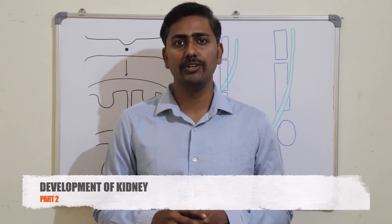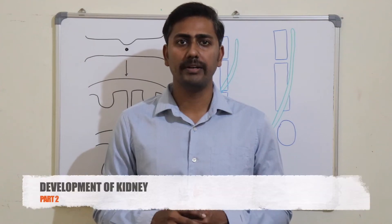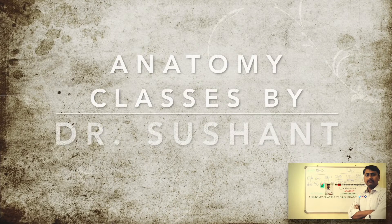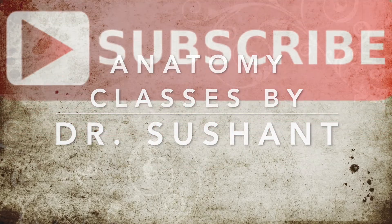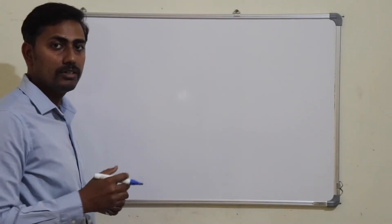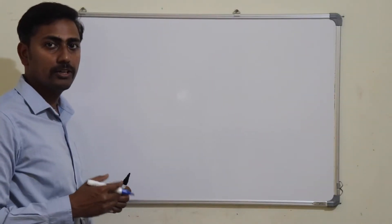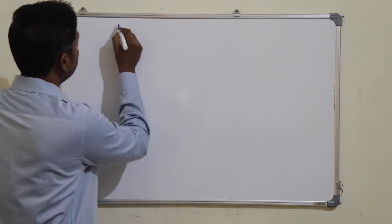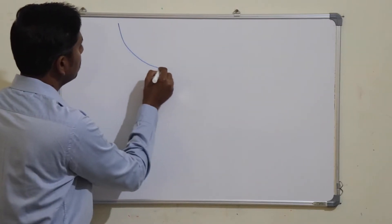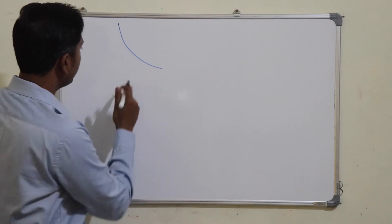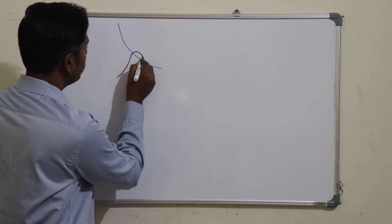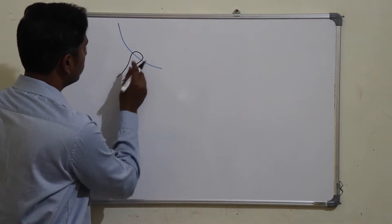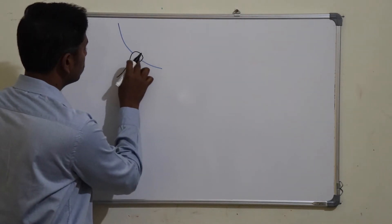Welcome friends. The topic of today's video is the deployment of kidney. Let us draw the metanephros and the growing ureteric bud. This is the metanephros. This is the growing ureteric bud which is growing cranially into the metanephric blastema or the metanephros.